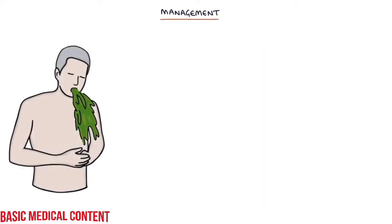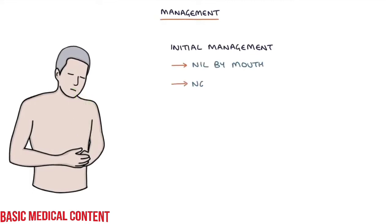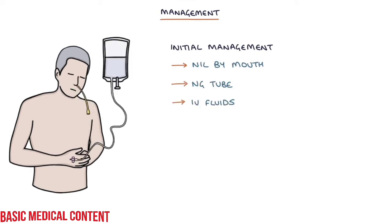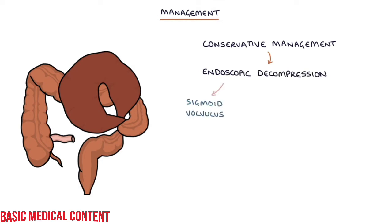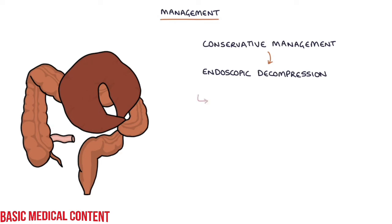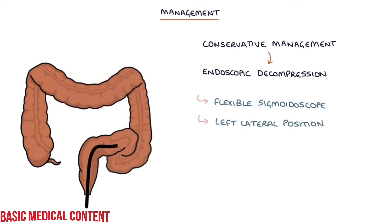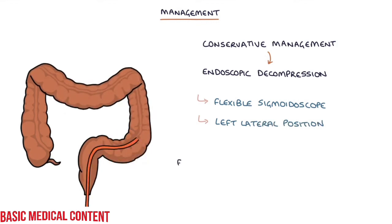The initial management is the same as with bowel obstruction: making the patient nil by mouth, inserting an NG tube, and providing IV fluids. Conservative management with endoscopic decompression can be attempted in patients with a sigmoid volvulus who don't have peritonitis. This involves inserting a flexible sigmoidoscope carefully with the patient in the left lateral position, resulting in correction of the volvulus. A flatus tube or rectal tube is left in place temporarily to help decompress the bowel and is later removed.